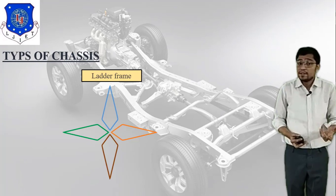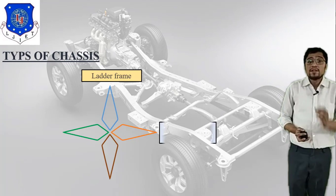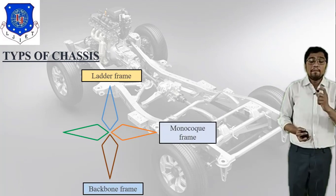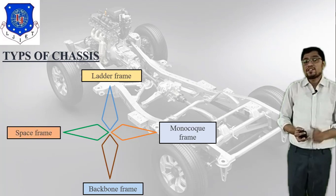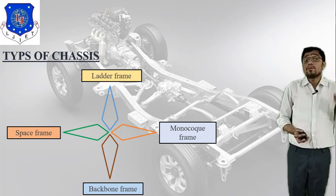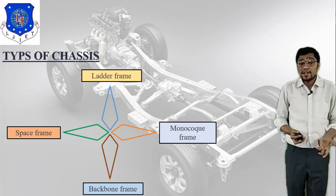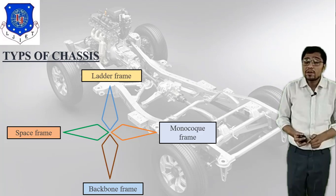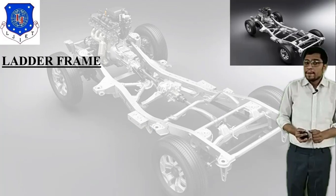According to different applications, passenger capacity, different materials, size, and design, we classify four types of chassis: first, ladder frame; second, monocoque frame; third, backbone frame; and fourth, space frame.